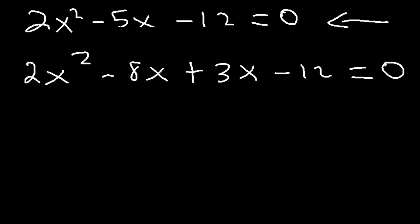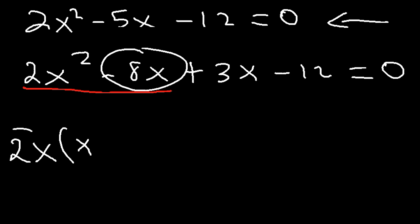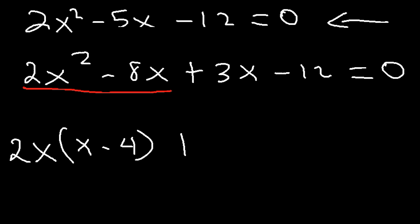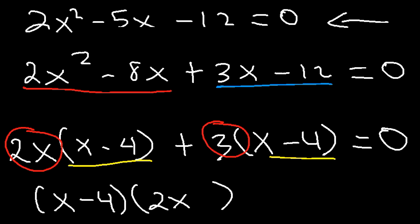Now we're going to factor by grouping. In the first two terms, take out the GCF. The greatest common factor between 2 and 8 is 2, and between x squared and x is x. So 2x squared divided by 2x is x, and negative 8x divided by 2x is negative 4. In the last two terms, take out the GCF which is 3: 3x divided by 3 is x, and negative 12 divided by 3 is negative 4. Notice we have a common factor: x minus 4. So write that common factor in one parenthesis, and 2x plus 3 in the other.